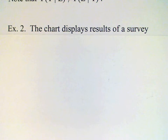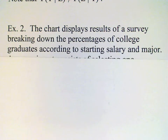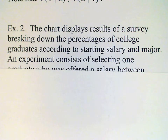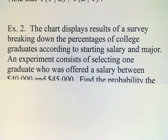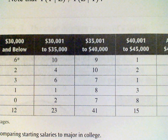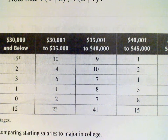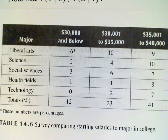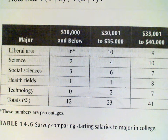In the next example we have a chart showing the results of a survey. The survey shows the starting salaries — or ranges of starting salaries — offered to various college graduates by major. The salary ranges go from thirty thousand and below, up to above forty-five thousand, with totals given in percents, so the grand total is one hundred. The majors listed are liberal arts, science, social science, health field, and technology.